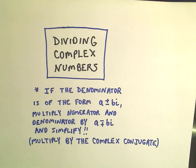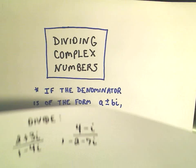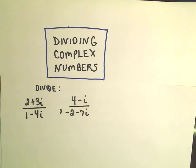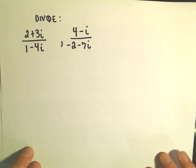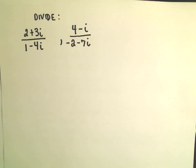Okay, in this video I'm going to do some more dividing of complex numbers. We had a couple other examples left from the other video. So in this case I'm going to divide 2 plus 3i over 1 minus 4i, and then we'll do 4 minus i over negative 2 minus 7i.